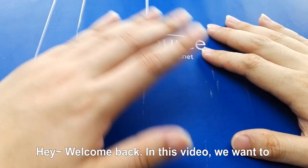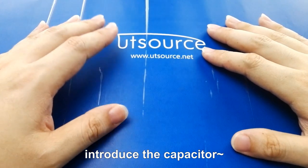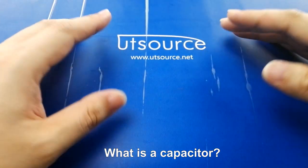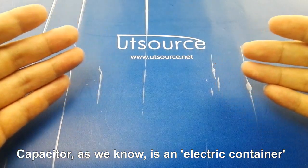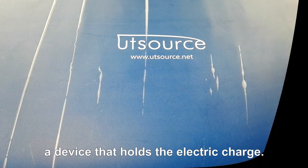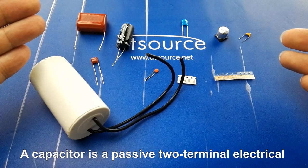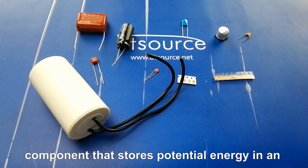Hey, welcome back. In this video we want to introduce the capacitor. What is a capacitor? A capacitor is an electric container, a device that holds electric charge. A capacitor is a passive two-terminal electrical component that stores potential energy in an electric field.